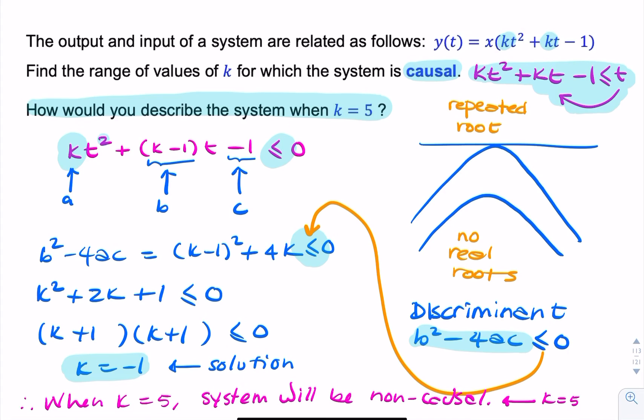But in our case, we've solved it, we've found that k has to be minus 1 for the system to be causal. Therefore, when k equals 5, it is a non-causal system.